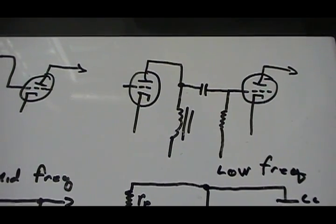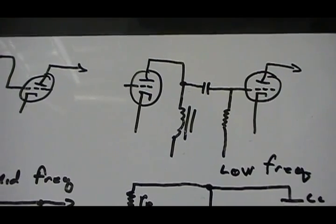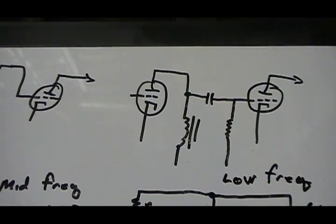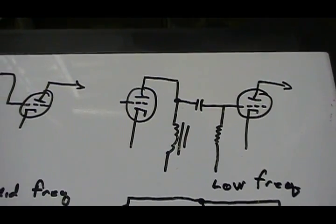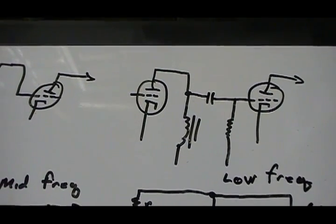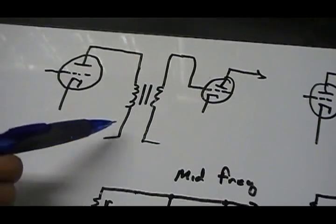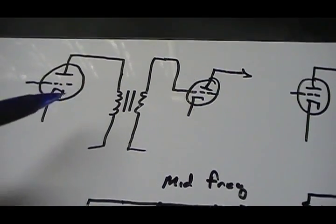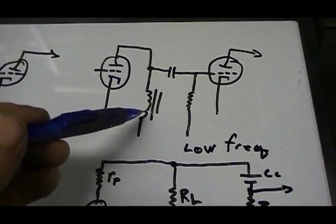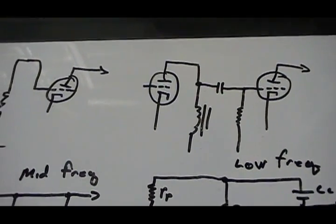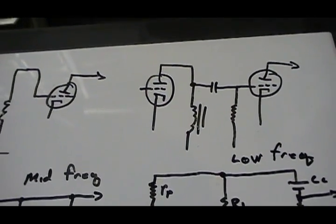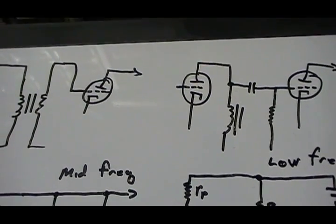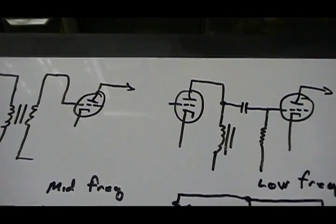That's really the only advantage of choke coupling — otherwise it has pretty much the same frequency response curve as RC coupling. The other problem is that chokes cost a lot more than resistors, similar to transformer coupling in that regard. For a one-off build it's no big deal, but if you're building a million of them it becomes a significant cost issue.